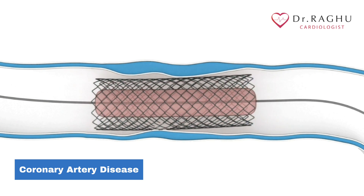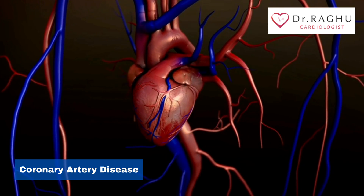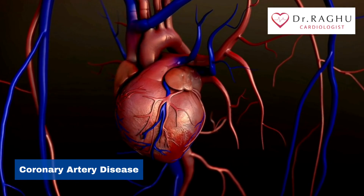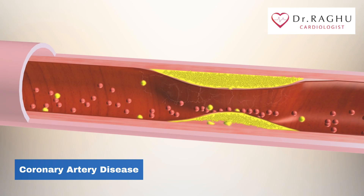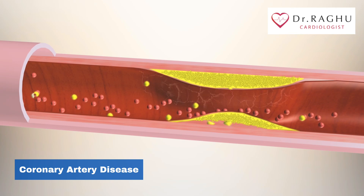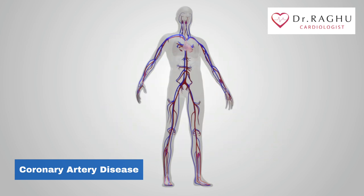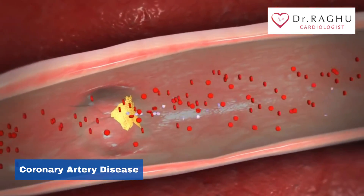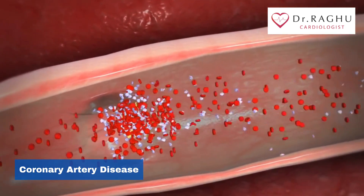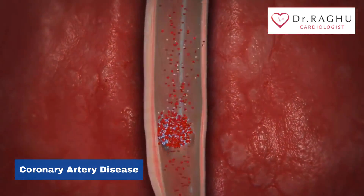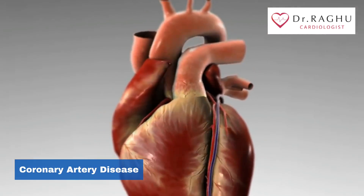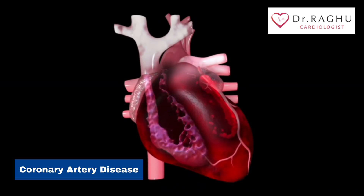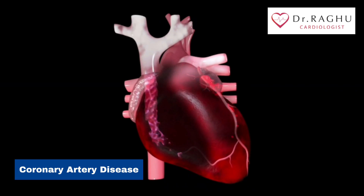If some areas of your heart are chronically deprived of oxygen and nutrients because of reduced blood flow, or if your heart has been damaged by a heart attack, your heart may become too weak to pump enough blood to meet your body's needs — a condition known as heart failure. Inadequate blood supply to the heart or damage to heart tissue can interfere with your heart's electrical impulses, causing abnormal heart rhythms.